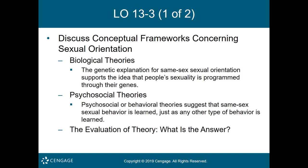Another study looked at 108 lesbians who had either identical or fraternal twin sisters and another 32 lesbians who had adopted sisters. Among almost half of the identical twins, both were lesbians; however, only 15 percent of fraternal twins and 6 percent of unrelated sisters were both lesbians. These results also support the idea of a genetic component to same-sex sexual orientation.